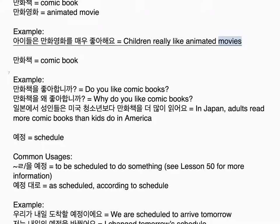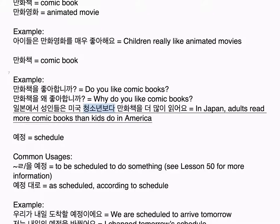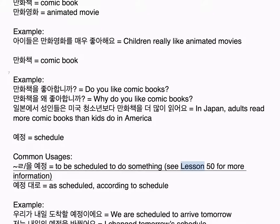만화 equals comics, cartoons. Common usages: 만화책 — comic book; 만화 영화 — animated movie. Examples: 아이들은 만화 영화를 매우 좋아해요 — children really like animated movies. 만화책을 좋아합니까? — do you like comic books? 만화책을 왜 좋아합니까? — why do you like comic books? 일본에서 성인들은 미국 청소년보다 만화책을 더 많이 읽어요 — in Japan, adults read more comic books than kids do in America.